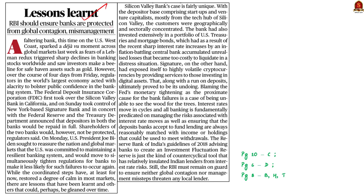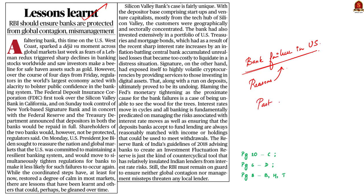This news article talks about the vulnerability of the banking system and the lessons we have to learn from the recent bank failures. This article is written because of the failure of two popular US banks, the Silicon Valley Bank and the Signature Bank. The author has quoted the reasons for the failure of these banks, and this could be taken as a warning for RBI to act cautious and proactive. We will understand what failures of banks have done in the past and see what global measures exist to prevent such bank failures.